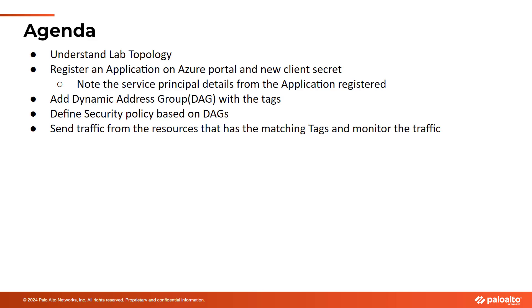We'll start with understanding the lab topology and policy that I am going to use. The first thing we need to take care of is to register an application on the Azure portal to get the service principal details that we'll use on Palo Alto Panorama. This will be used by the Azure plugin to monitor resources. We'll then add dynamic address groups using the tags monitored by the Azure plugin, use these groups in policy definitions, send traffic to match those Azure tags, and see how the traffic is reported.